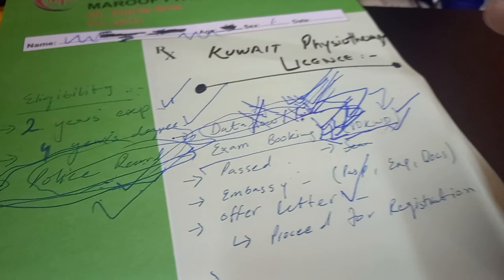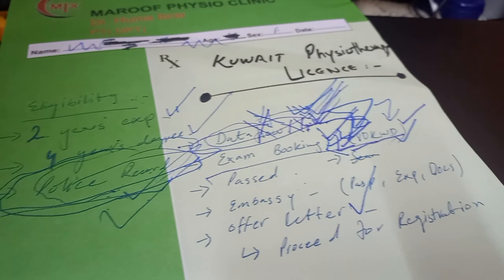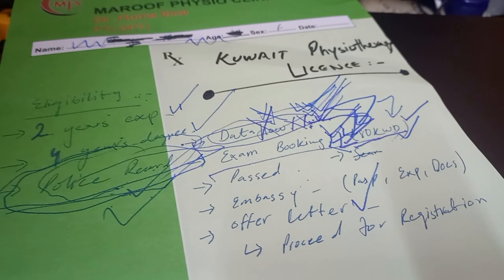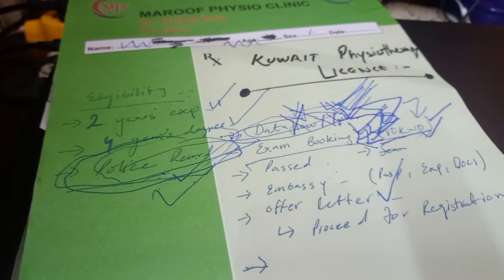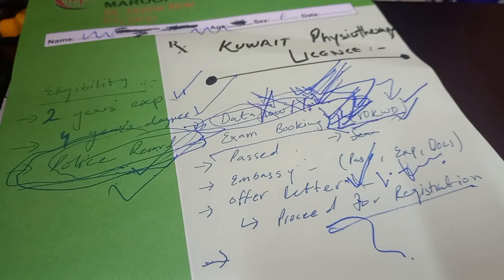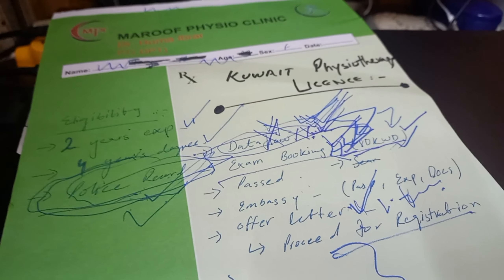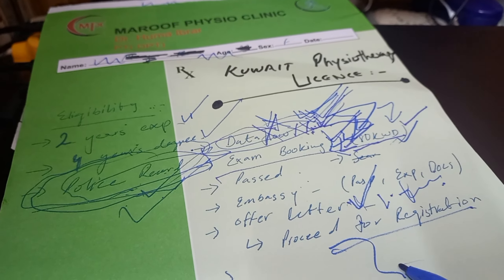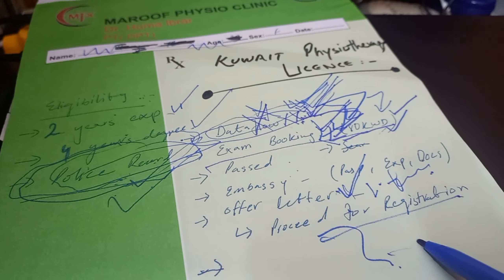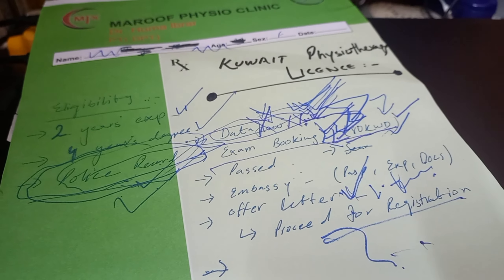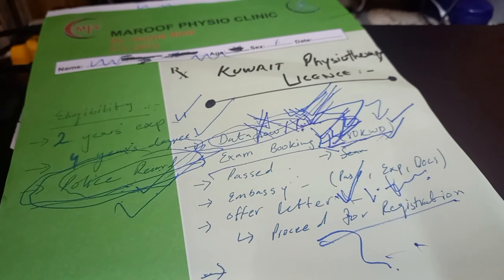If you've passed the exam, move towards the embassy to attest your documents, including your experience letter, your documents, and your passport. After that, apply for a job in Kuwait. Once you get your offer letter, proceed for registration. For registration, you must have the signature of an authorized member — a doctor or someone from your organization — and this is the most important requirement.